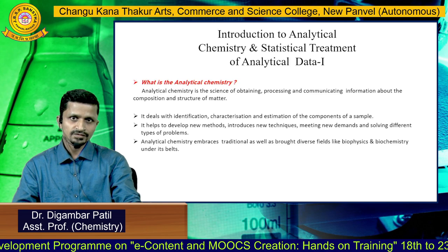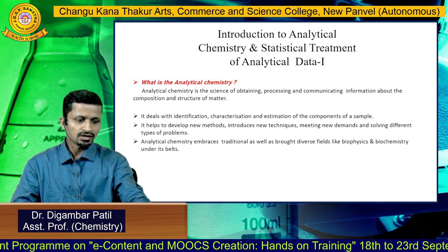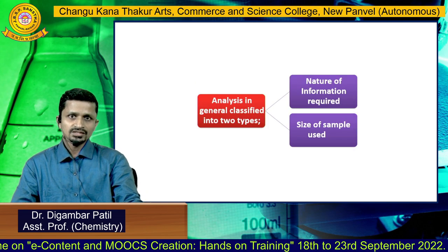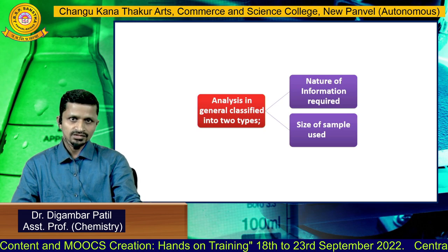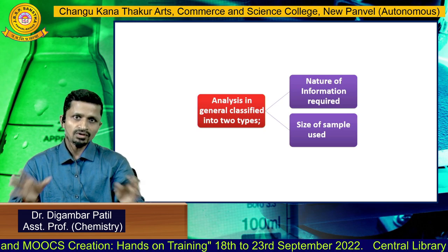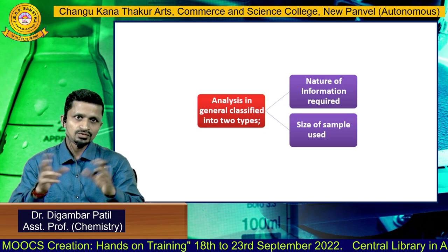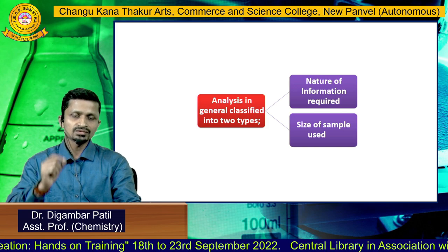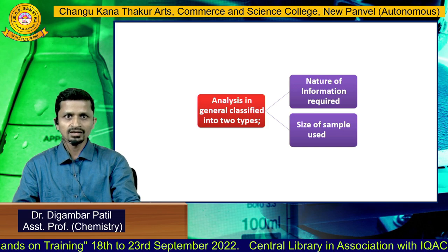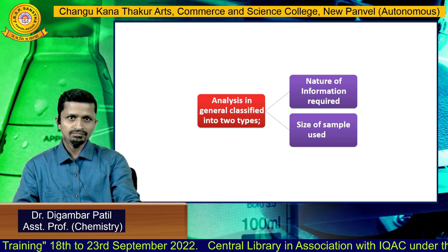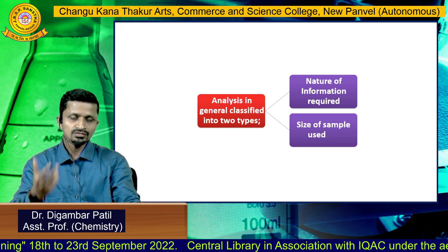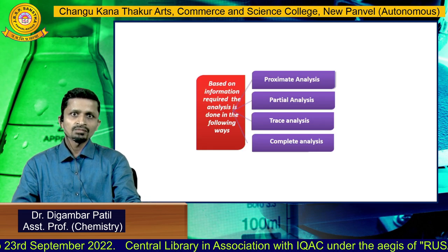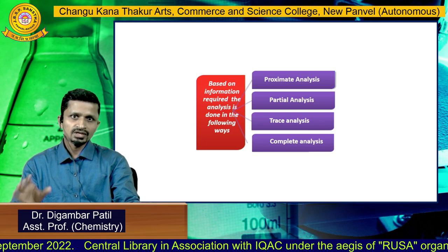In today's lecture we will learn the classification of chemical analysis. Chemical analysis is broadly classified into two types: first, based on the nature of information required, and second, based on the size of the sample used for the analysis.